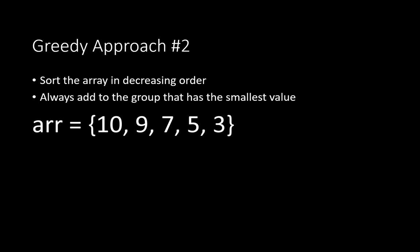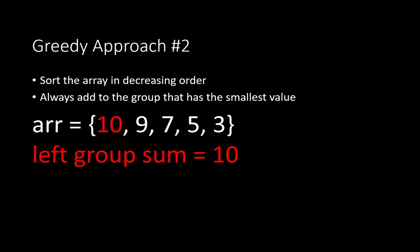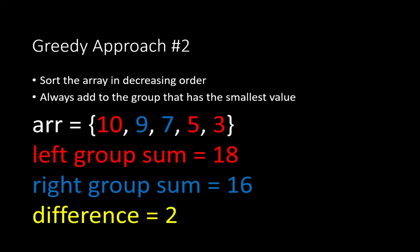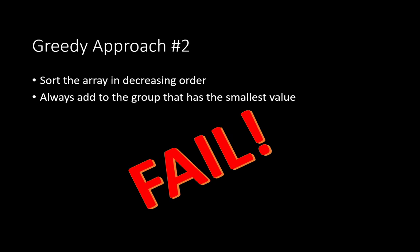If we take this test case instead and follow the strategy again, we add 10 to the left group, 9 to the right group. Then since 9 is smaller than 10, we add 7 to the right group. Now 10 is smaller than 16, so 5 goes to the left group. We have 15 and 16, and since 15 is smaller, we add 3 to the left group. This gives us a difference of 2. But we can do better — putting 10 and 7 together gives 17, and 9, 5, and 3 also give 17, for a difference of 0. So this greedy approach fails as well.